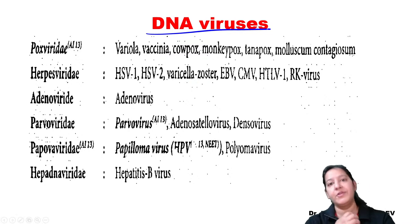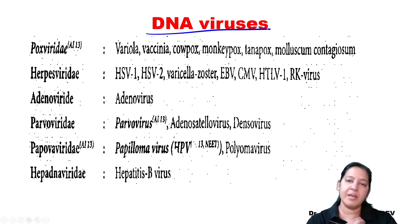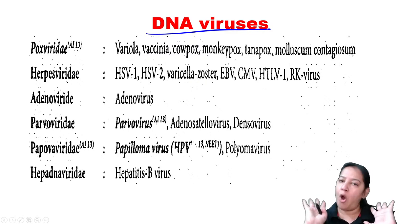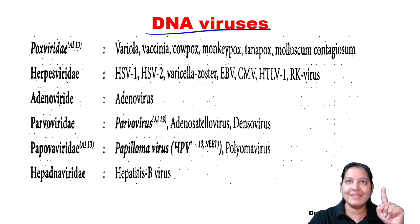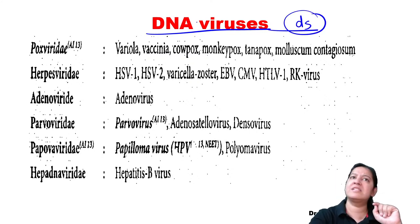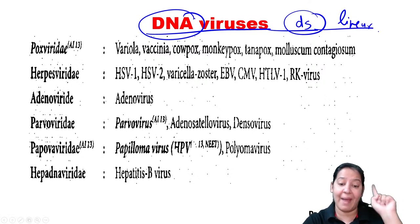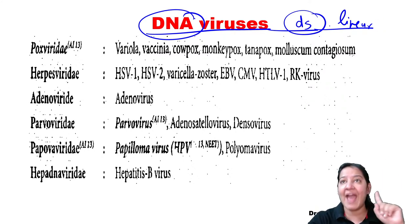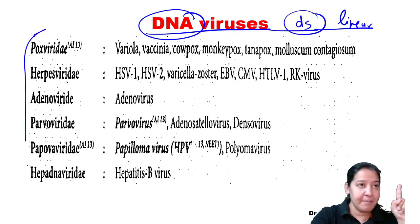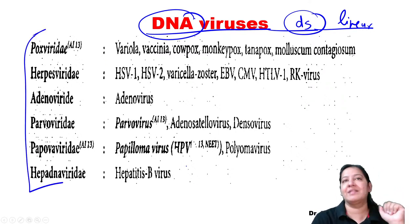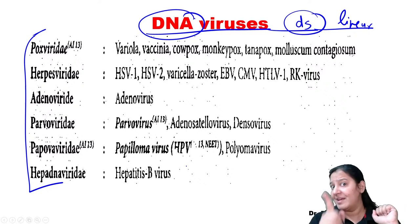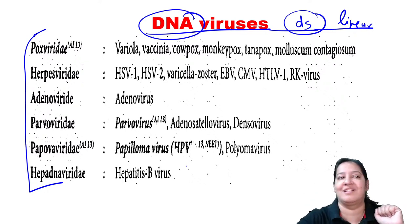Now, among these DNA viruses - is DNA double-stranded or single-stranded? Normally all DNA is double-stranded. So all DNA viruses have double-stranded DNA. This double-stranded DNA is linear - not circular like bacteria. Bacteria have circular DNA, but viruses have linear double-stranded DNA like humans - linear double-stranded, except one exception. Among the six DNA viruses, one has single-stranded DNA.